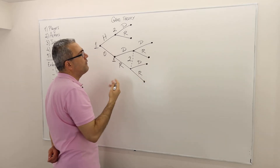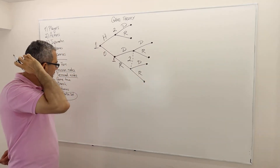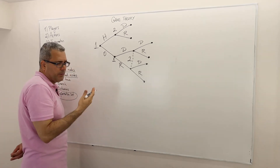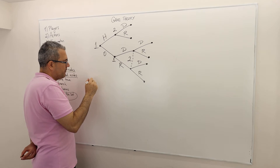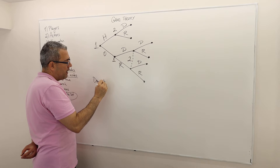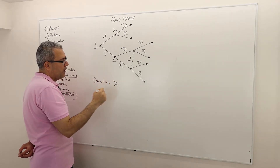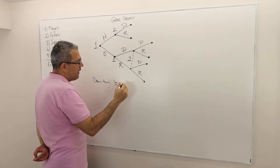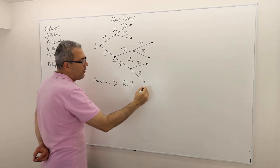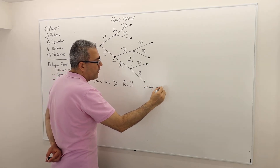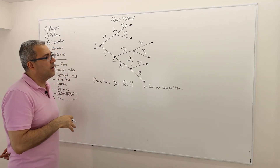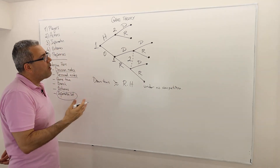I'm going to assume the following in terms of preferences, which I sort of mentioned. Everybody prefers opening a restaurant downtown — downtown is definitely preferred to, or at least as good as, opening a restaurant in Richmond Hill. But that's under no competition. Once we have competition, things differ.